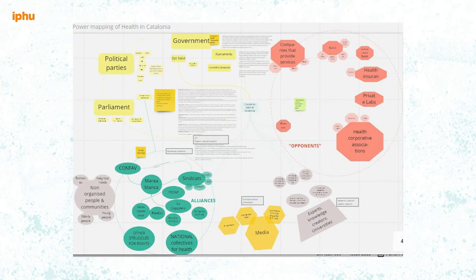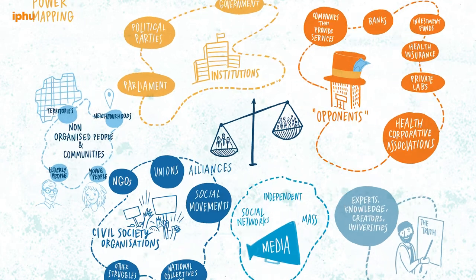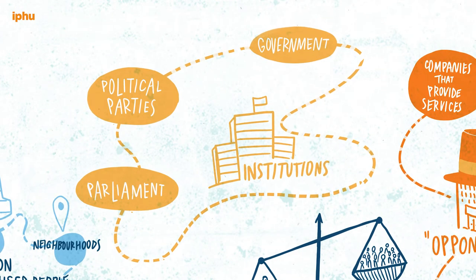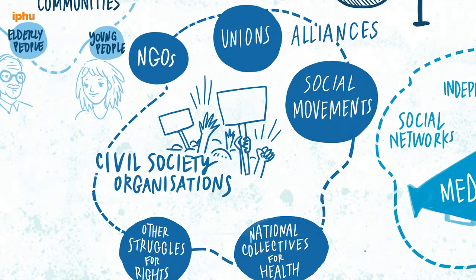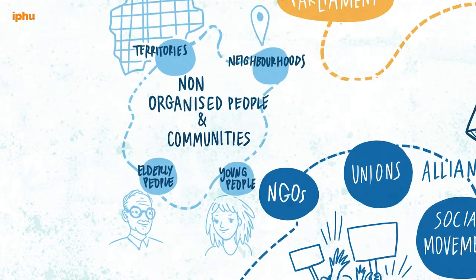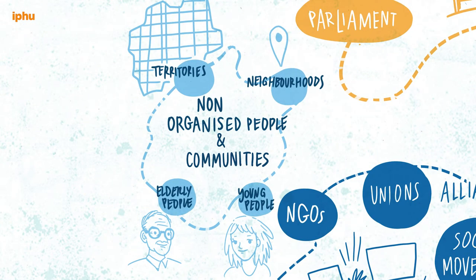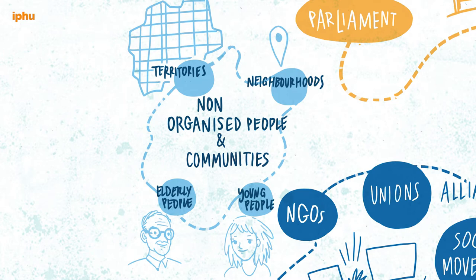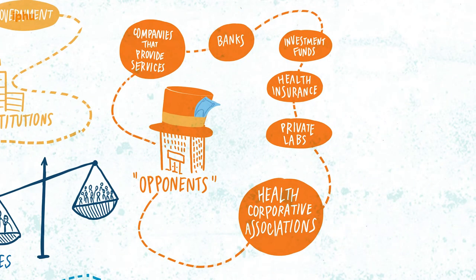When we want to generate social transformation, we need to address actors around us that are key in order to make it possible. On the one hand, institutions, which may be our target for changing rules, laws, or policies — we definitely want to influence them to create long-term and significant changes. Civil society organizations, among which many are potentially our allies, need their alliances strengthened and developed. With non-organized people or communities, we may raise awareness and involve them if possible, otherwise having them on our side.